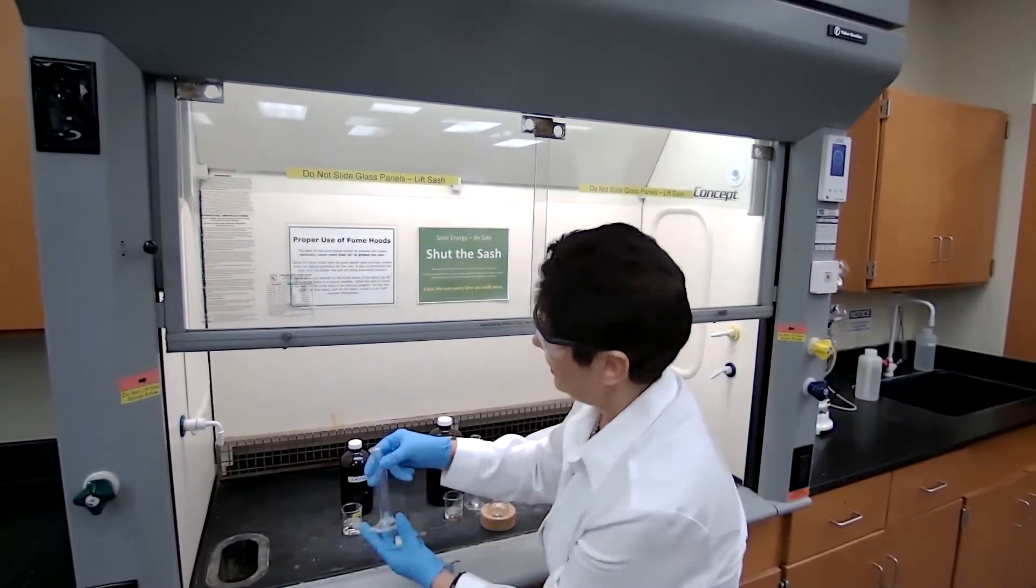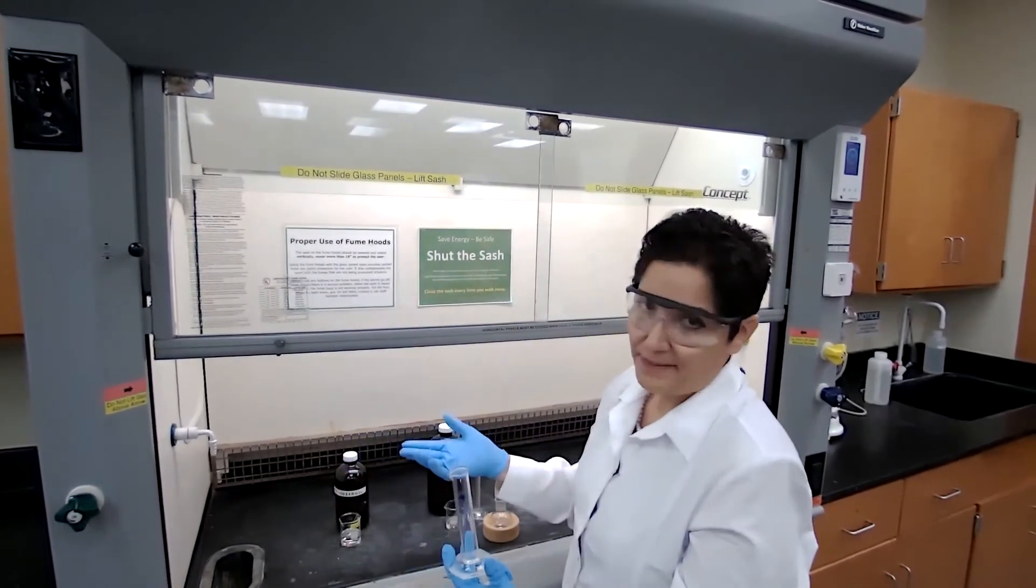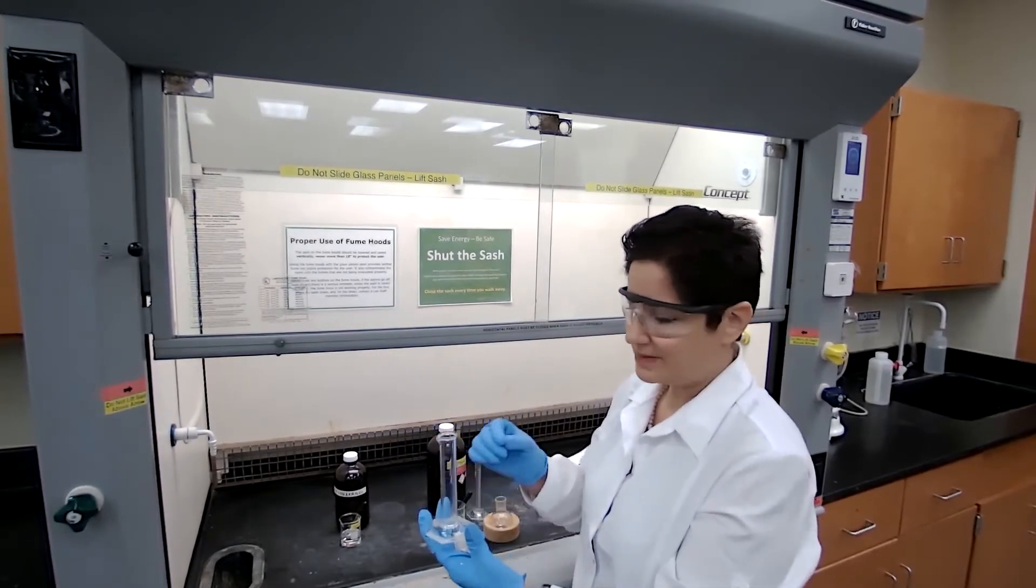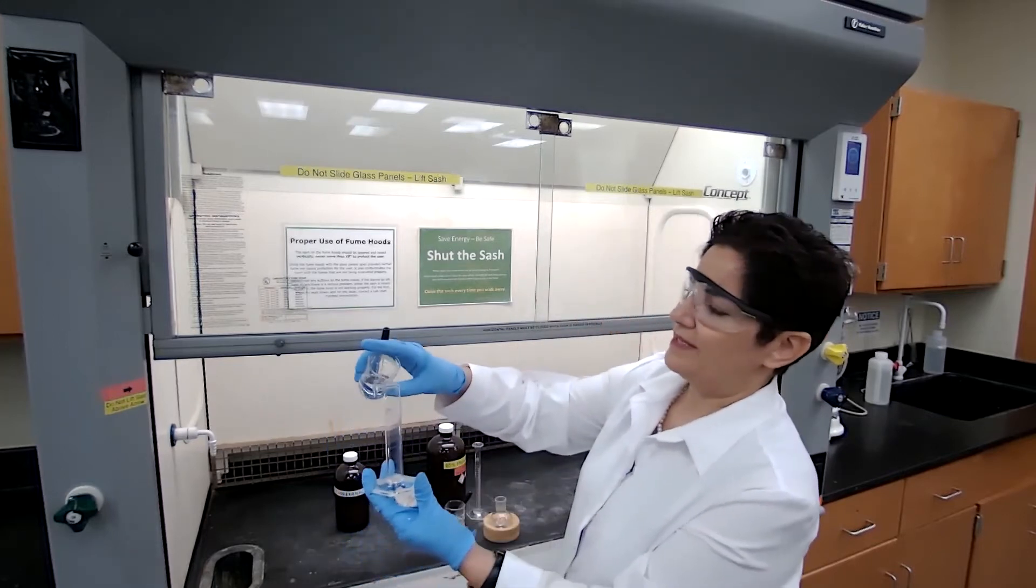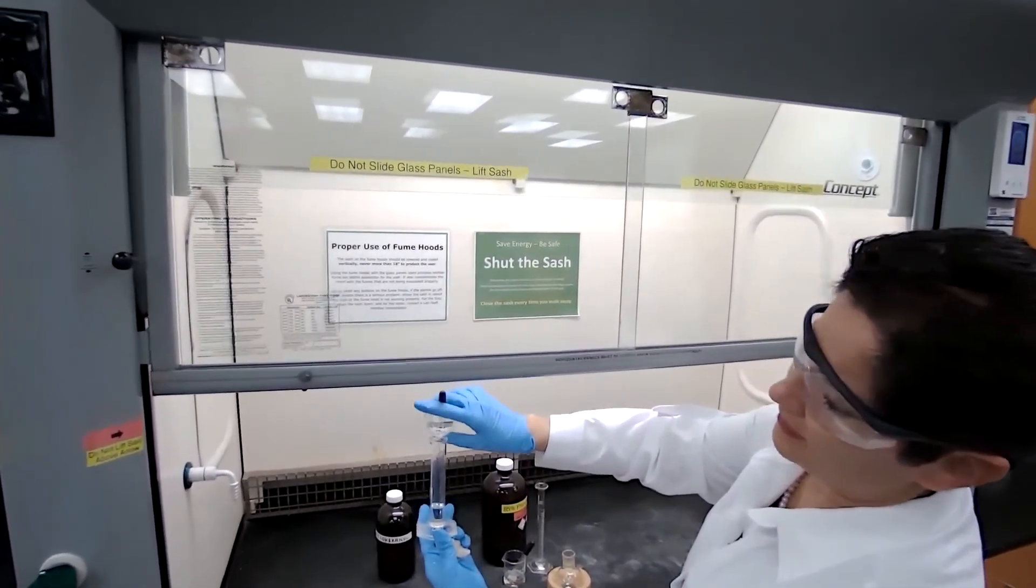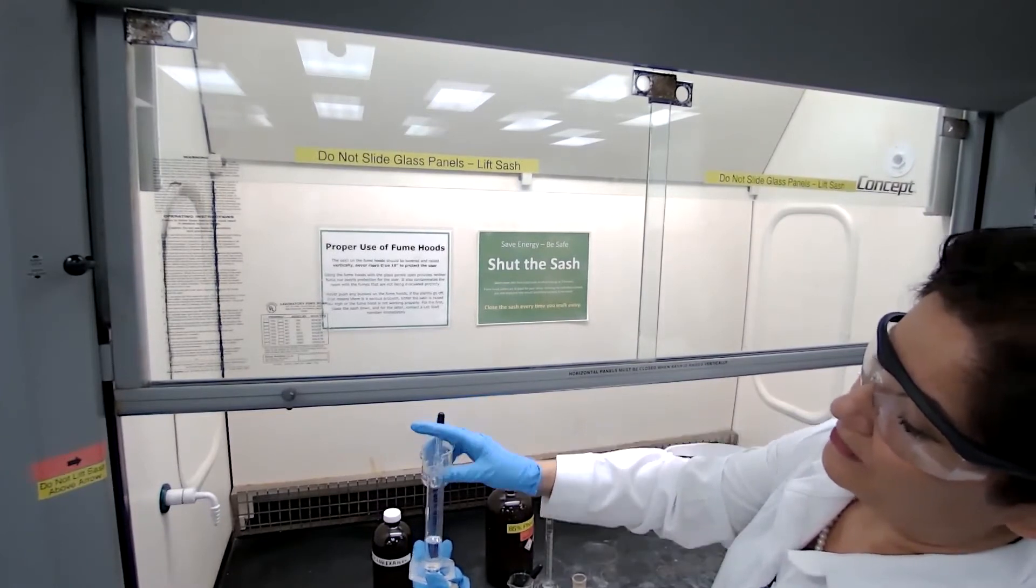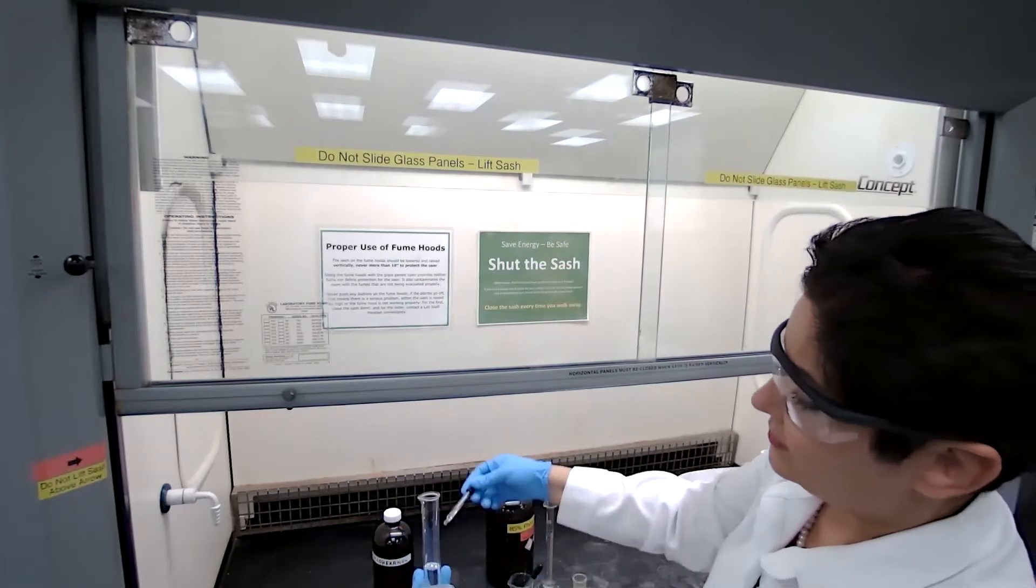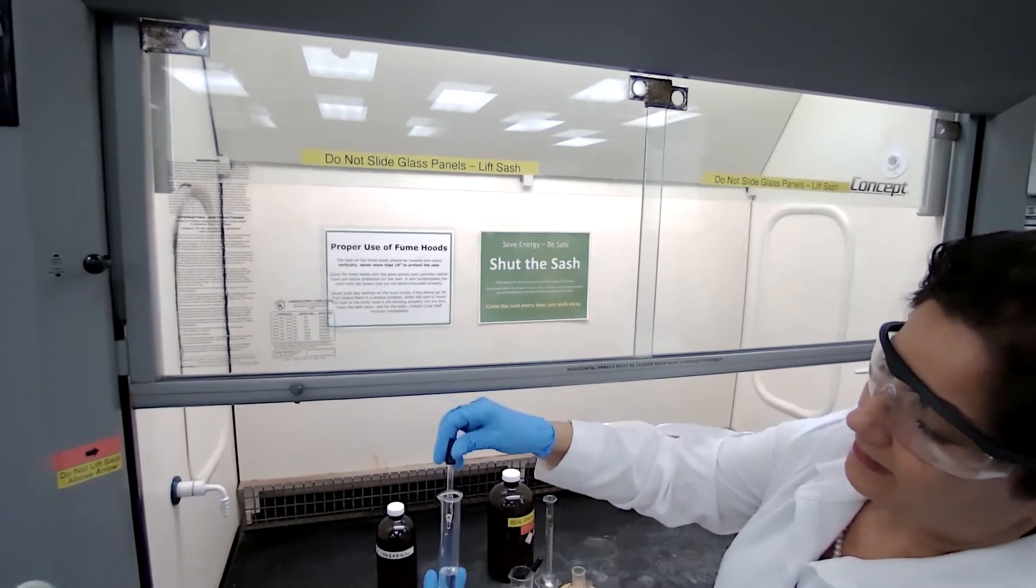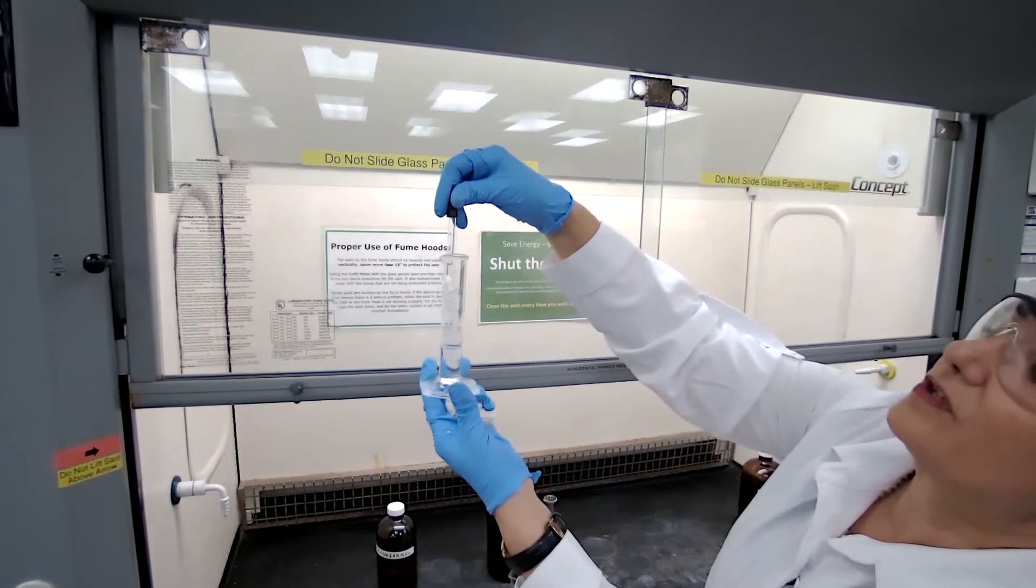For measuring cyclohexanol, we need 10 grams based on calculation using the density, that equals 10.6 milliliters. So I'm going to measure 10.6 milliliters. I often pour first using the beaker, and when it gets close to the mark, then I use the dropper to adjust. I add one drop at a time until it reaches 10.6.